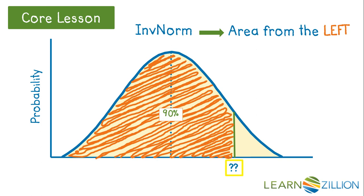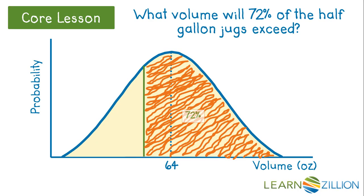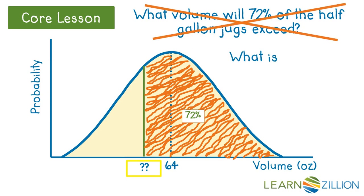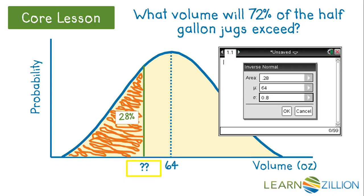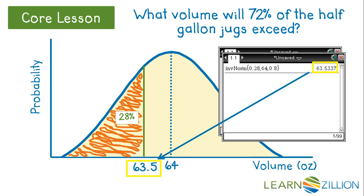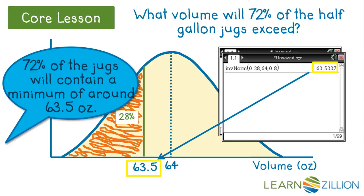If we want to determine a value that corresponds to an area under the curve to the right, we have to think about the problem differently in order to use the Inverse Normal function. Suppose we want to know the volume that 72% of the milk jugs exceeds. In order to use the calculator's Inverse Normal function, we recognize that the answer is the same as asking: what is the 28th percentile volume? We enter 0.28 for area, 64 for the mean, and 0.8 for the standard deviation. The calculator returns 63.5337, which is the value on the horizontal axis corresponding to an area of 0.28 to the left. This means 72% of the milk jugs will contain a minimum of around 63.5 ounces of milk.